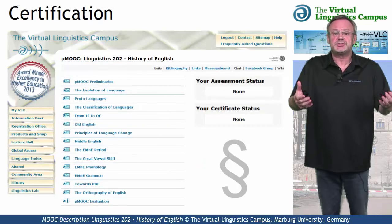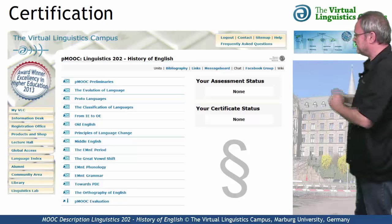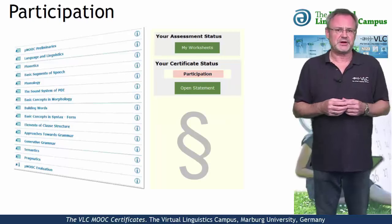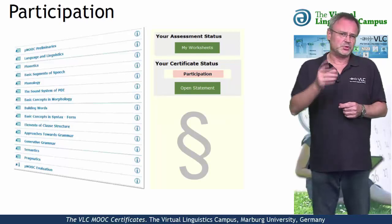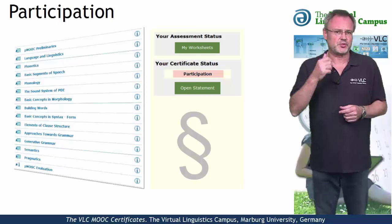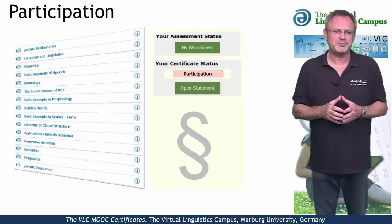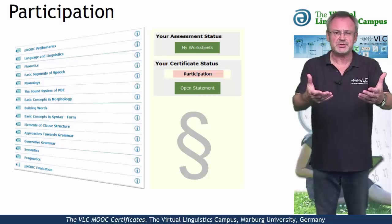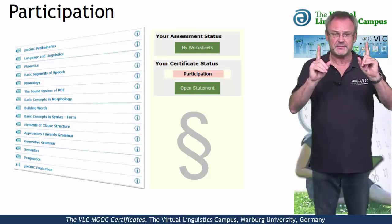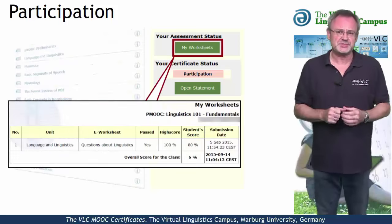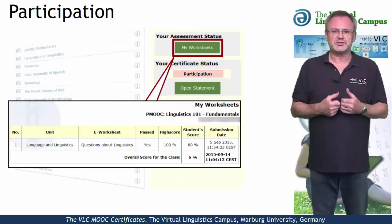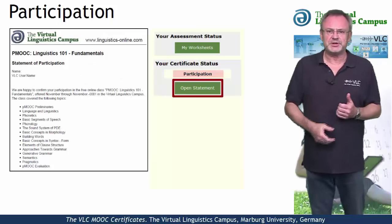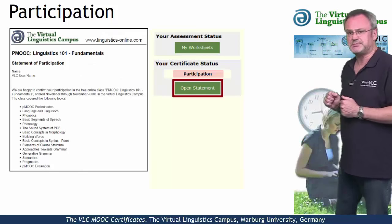And if you want a certificate, here are your options. The simplest option is the statement of participation issued by the Virtual Linguistics Campus. You will receive such a certificate for regular and active participation, including the submission of at least one worksheet, and it is free. Once you have successfully submitted a worksheet, you will be eligible for such a certificate and can open it by hitting the Open Statement button.